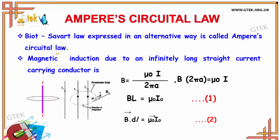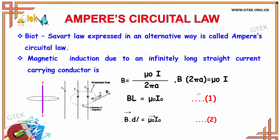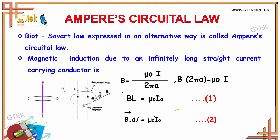The Biot-Savart law expressed in an alternative way is called Ampere's circuital law. Magnetic induction due to an infinitely long straight current-carrying conductor is B equals mu naught I divided by 2 pi A. Rearranging, B times 2 pi A equals mu naught I. Replacing 2 pi A as L, we get BL equals mu naught I.